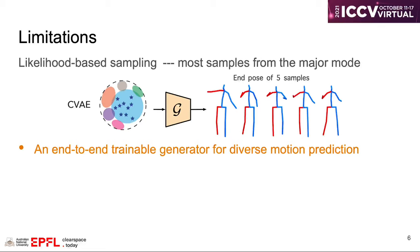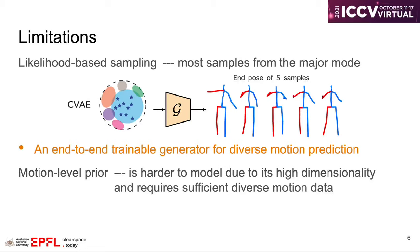This motivates us to directly train a generator for diverse motion prediction. The other factor that constrains the sample diversity of the generator is the motion prior used by almost all previous methods.